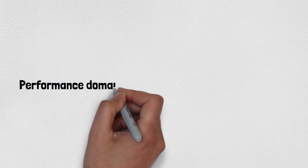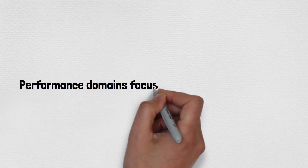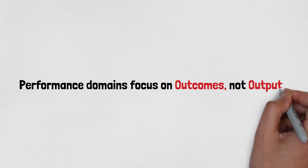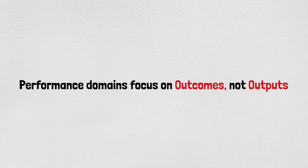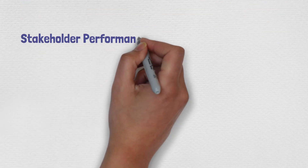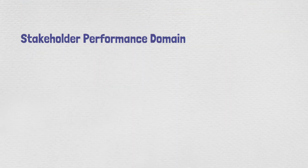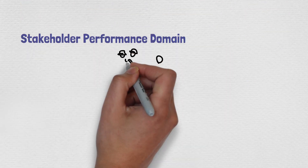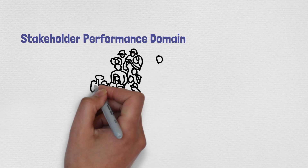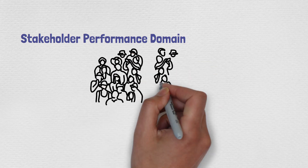Before we go into more detail on each performance domain, it's important to note that performance domains focus on outcomes, not outputs. If you recall PMBOK 6th edition, we were discussing processes and outputs, not outcomes.